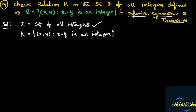Observe this relation R. What is x? X is an element in Z, that means x is an integer. What is y? Y is also an element in Z, that means y is also an integer. For example, you take two integers and subtract: 2 minus 3 is minus 1. Minus 1 is an integer. So the ordered pair (2, 3) belongs to R. Such ordered pairs will be there in the relation.